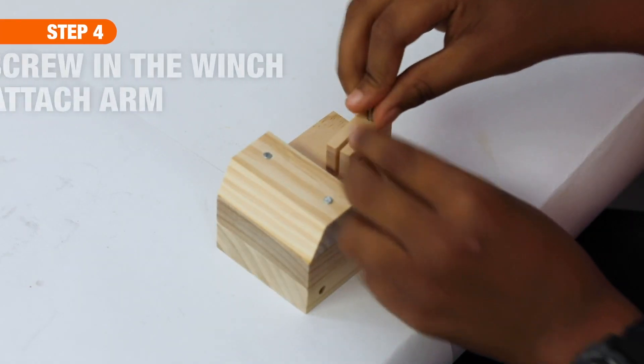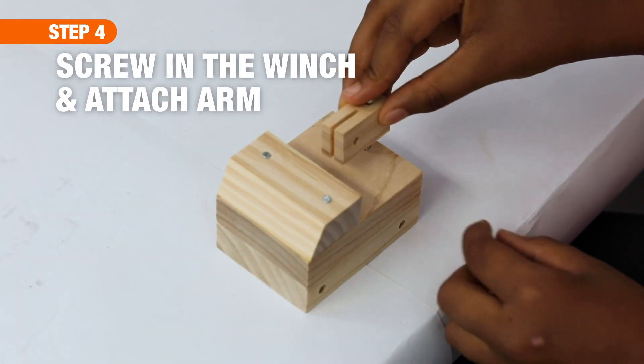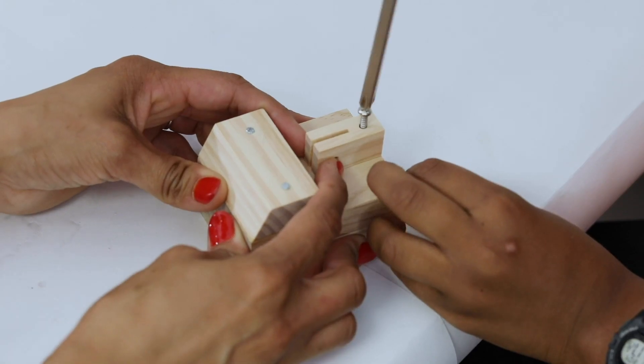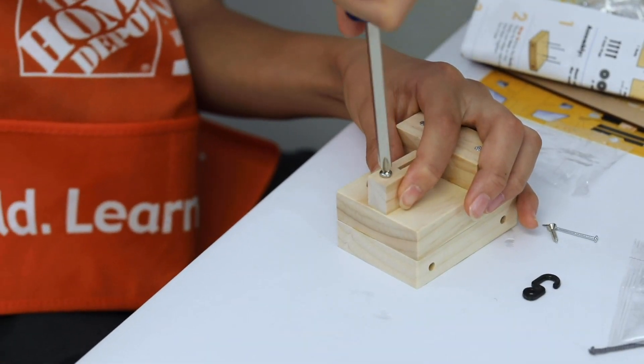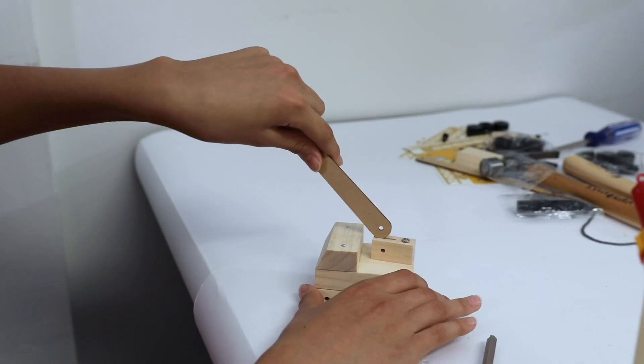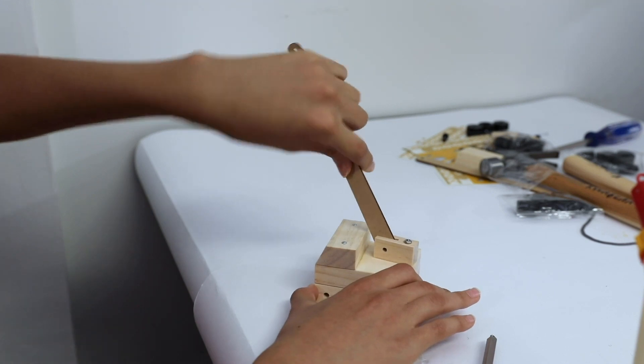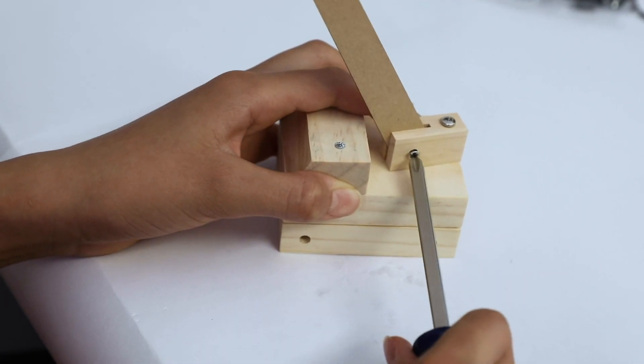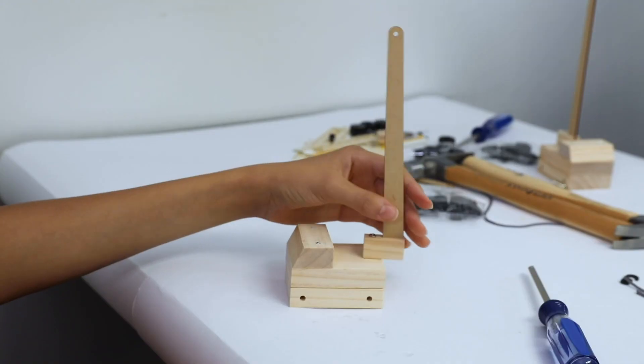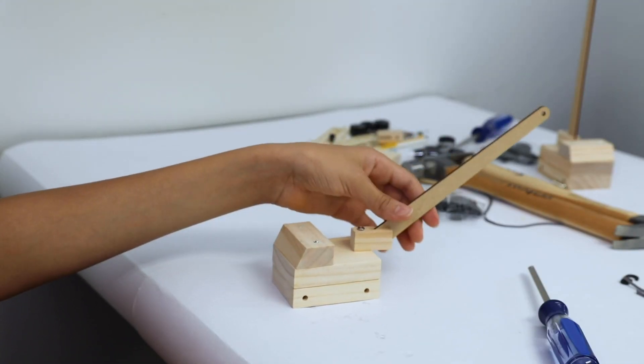For step four, place the winch on top of the body with the screw holes matching up. Using a number two Phillips screwdriver, attach them together with the long screw. You want to slide the wider end of the arm into the cutout into the winch and align the holes. Attach them together with a short screw and adjust the short screws so that the arm is not too tight or too loose.